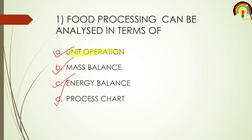Unit operation is nothing but a process where only physical changes take place and chemical changes won't take place. Such an operation or such a process where only physical changes take place is called a unit operation. Now the second question.